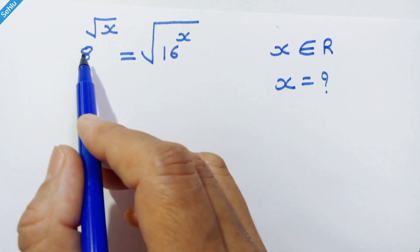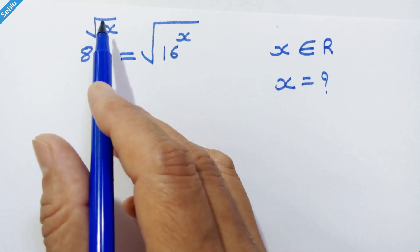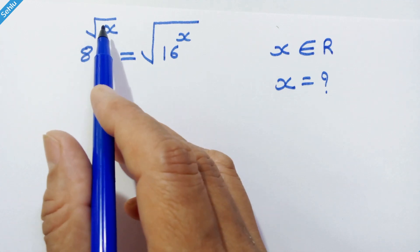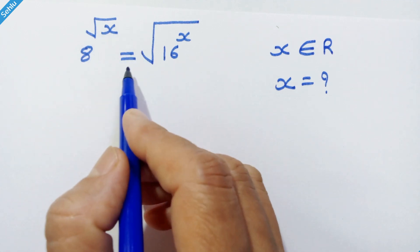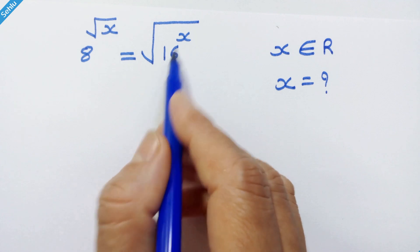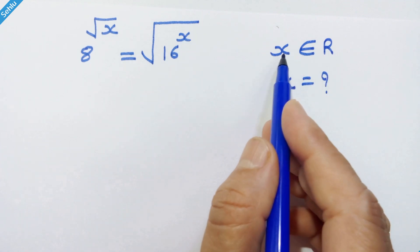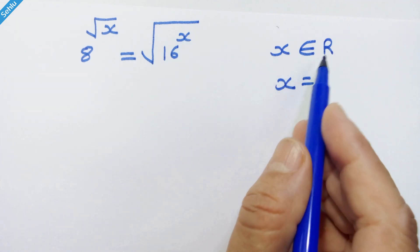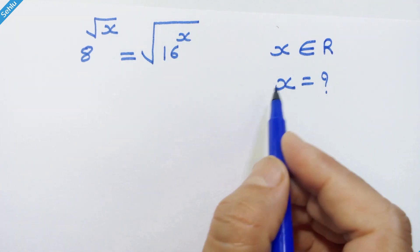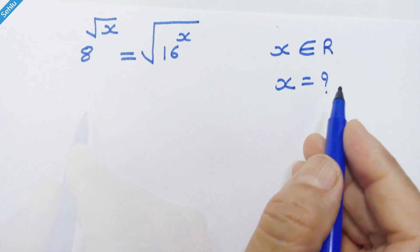Hello friends. Here we have 8 raised to the square root of x is equal to the square root of 16 raised to x, where x is a real number. Let's solve for x.